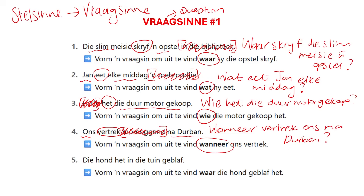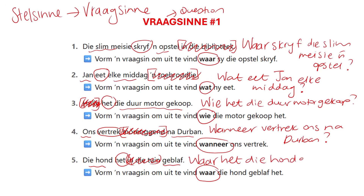Question mark. Last one — let's see if my theory holds. 'Die hond het in die tuin geblaf.' We have to form a question to find out waar die hond geblaf het. So the dog is barking in the garden. In die tuin is not supposed to be in our fragsene, because that is the answer. We start with the question word: waar. Then immediately following the question word will be the verb — our first verb: het. So waar het. The rest of the sentence remains the same in the exact same order: 'Waar het die hond geblaf?' Don't forget your question mark. And you've successfully changed all stalsene to fragsene. That is it guys, I will see you in the next one.